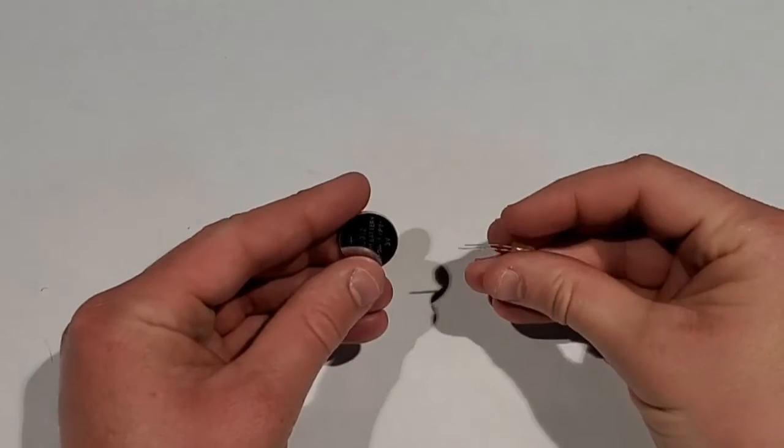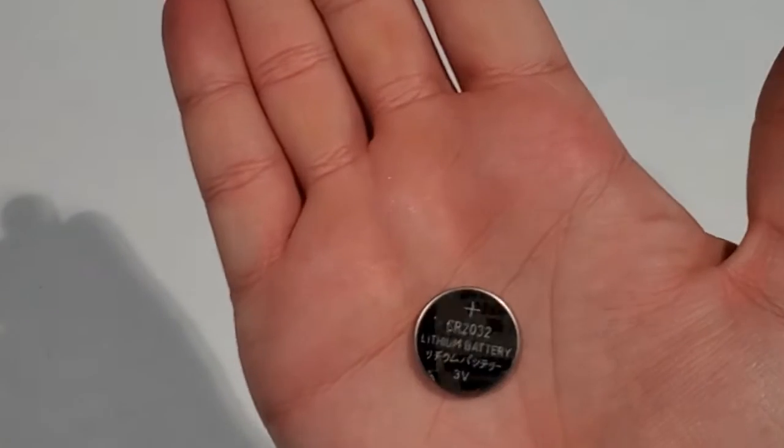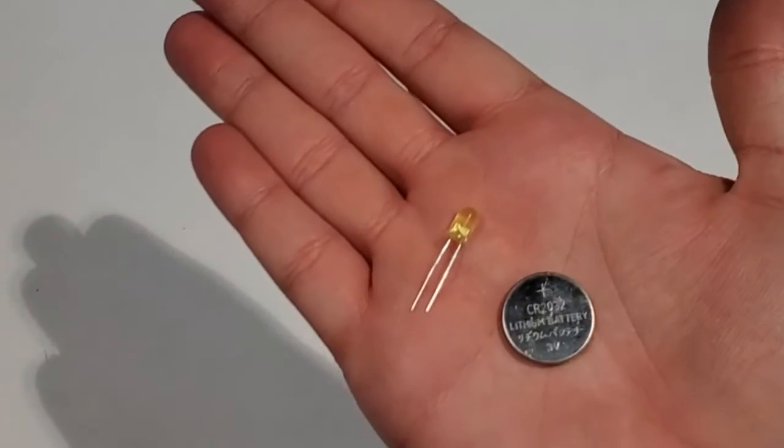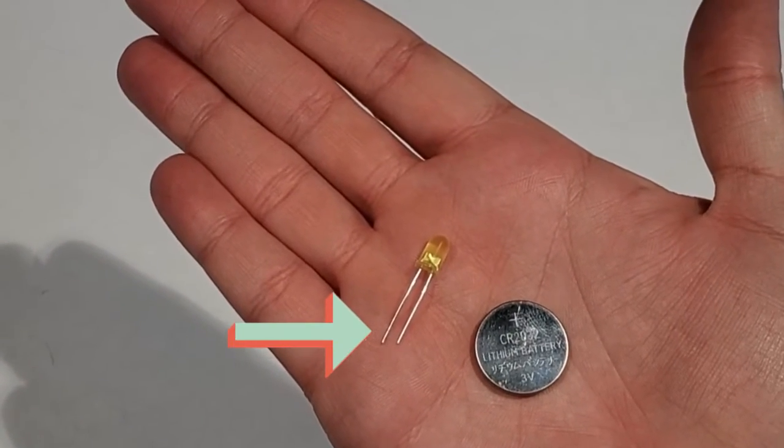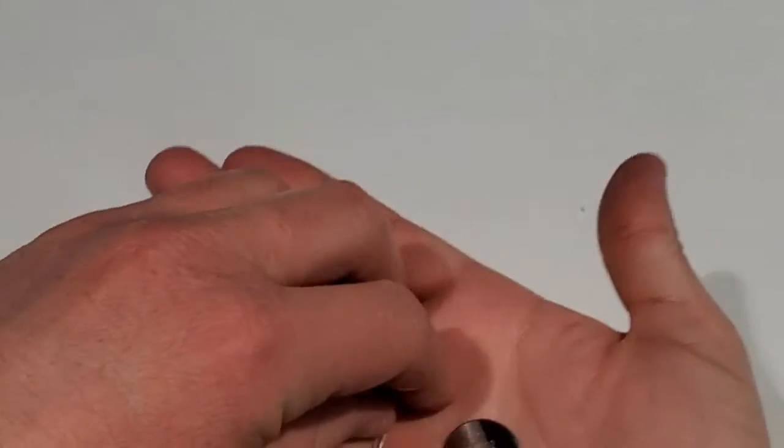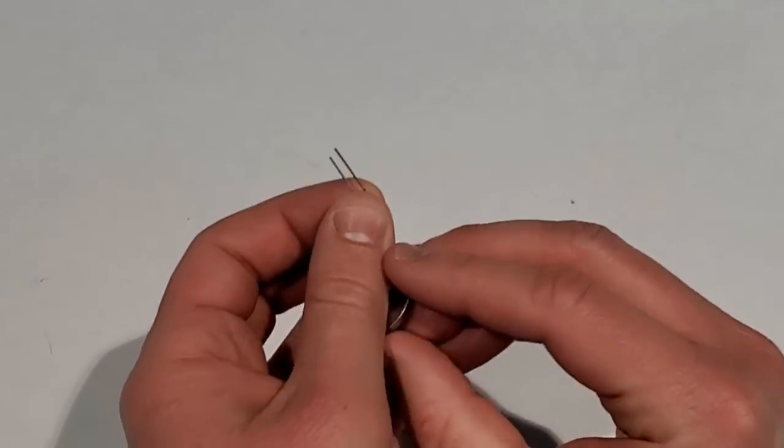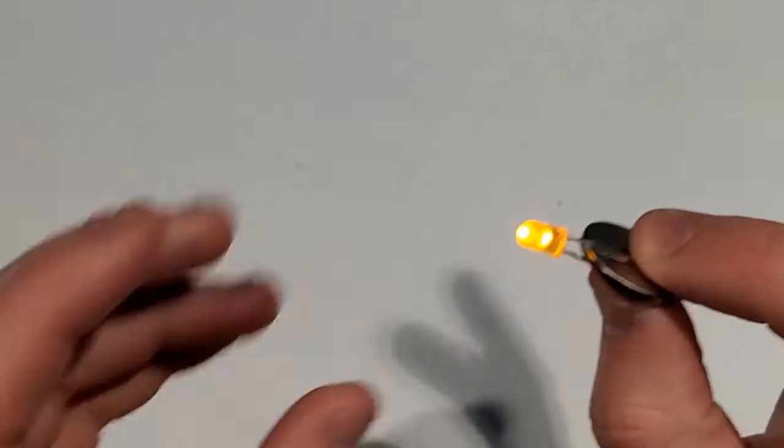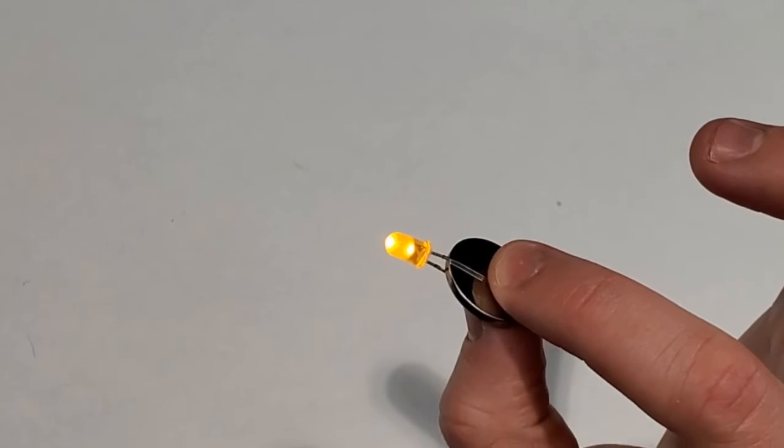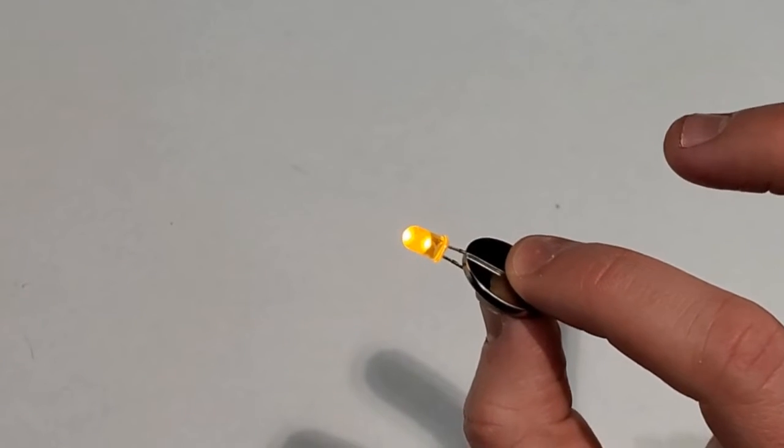We're going to start by showing you just how to get a simple LED lit up with this battery. Notice there's a plus sign on that side of the LED battery, and this prong of the LED is slightly longer. That's going to line up to your positive side of the battery. The other side will go on the negative side of the battery. And there you have it. You have light.